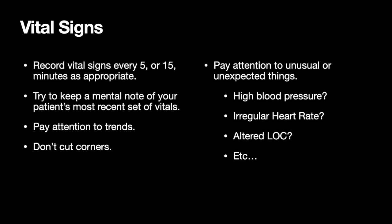High blood pressure and irregular heart rate are other examples. Irregular heart rates are very common, especially in folks over 55 or 60. A lot of people have atrial fibrillation — it's not problematic and they take medications for it. If you find someone with an irregular heart rate, ask if they've been previously diagnosed and if they take medications for it. If they haven't, that becomes a pertinent piece of history to pass on.